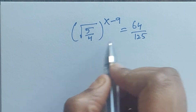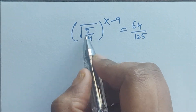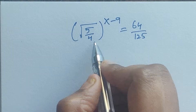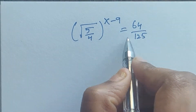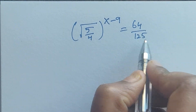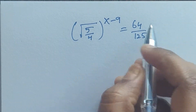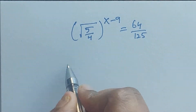Hello everyone. Here we have one problem: square root of (5/4) to the power of x minus 9, equals 64 divided by 125. So how do we solve this? Let's see.